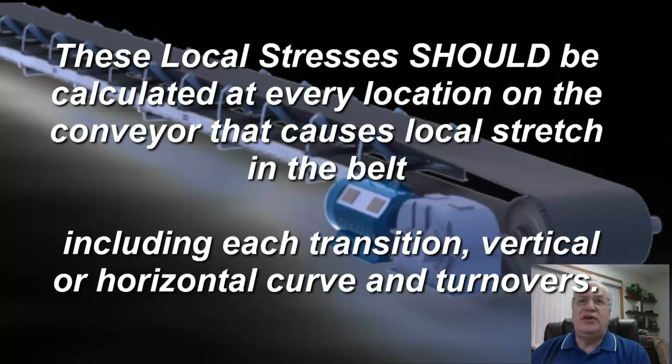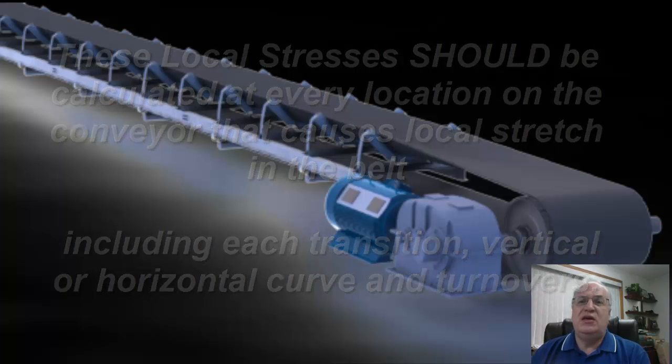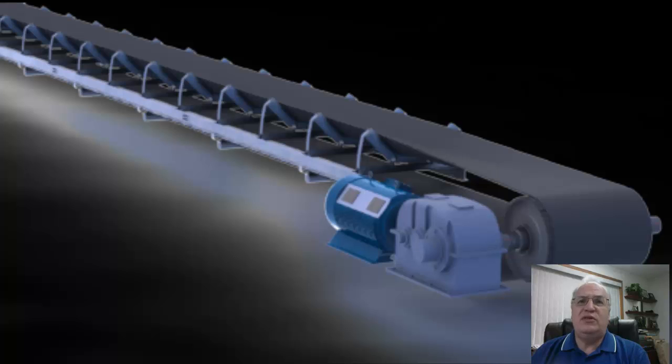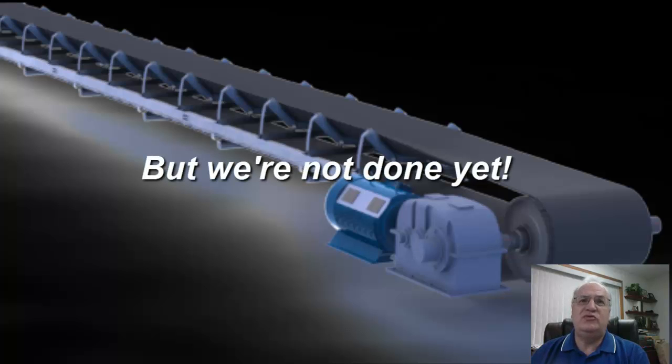But these local stresses need to be calculated for every location on the conveyor that causes local stretch in the belt. This includes transitions, vertical curves, horizontal curves, and any turnovers. So wherever the belt is getting stretched abnormally across the width, that's what we're interested in. But we're not done yet.